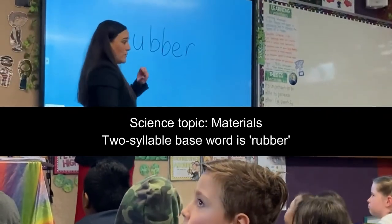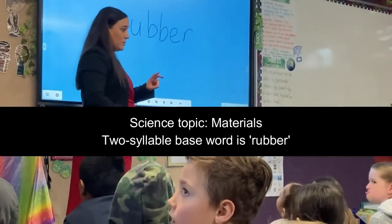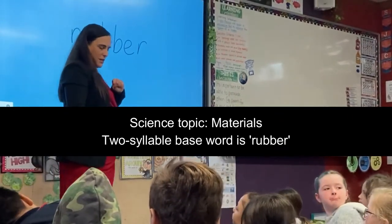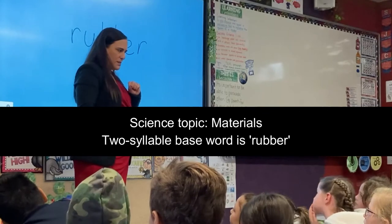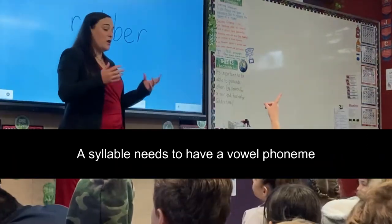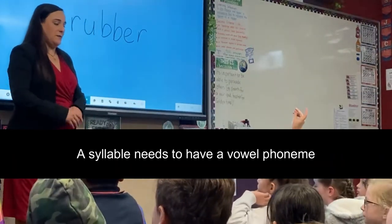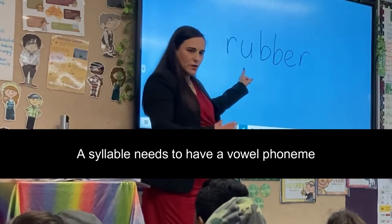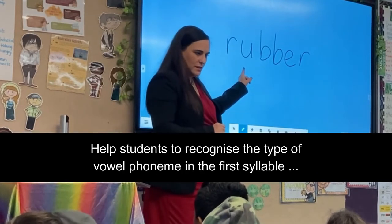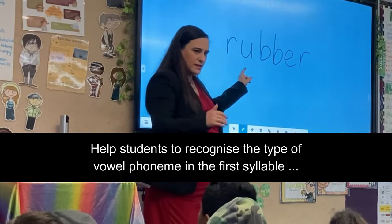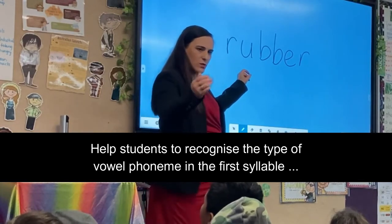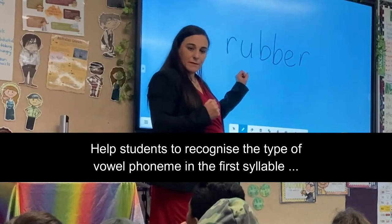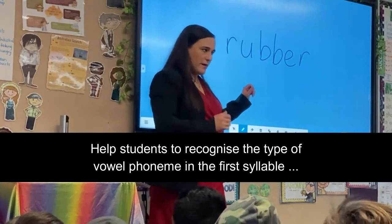So in this word we've got two syllables. In the first clap we had a vowel sound. Can you hear the vowel sound? What's the vowel sound? A syllable needs to have a vowel sound in it. What sort of vowel can you hear in the first syllable? Is it a short sound or is it a long kind of a sound? I think it's a short sound. Yeah, it's a short vowel sound.